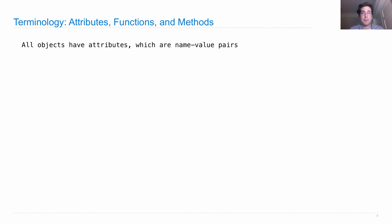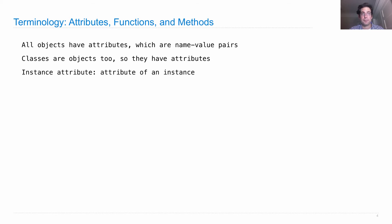All objects have attributes and they're name-value pairs. Classes, by the way, are objects too — they're just a special type of object because they can be the class of another object. So classes have attributes. An instance attribute is an attribute of an instance. An instance is anything that was created by calling a class, so we say something is an instance of a class if we created it by calling that class, and every object has a class it's an instance of.